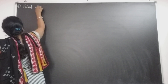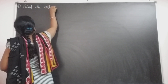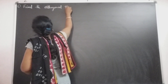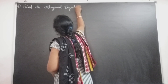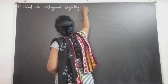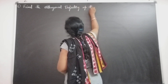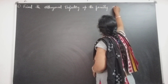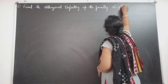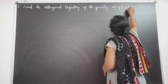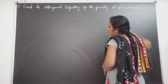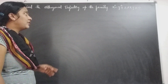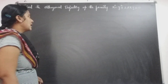The first problem is: find the orthogonal trajectory of the family x² - y² + 2λxy = 0. This is the problem and we need to find the given family's orthogonal trajectory.